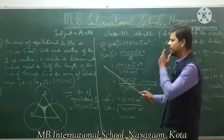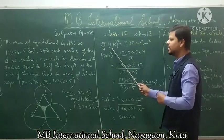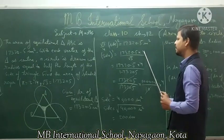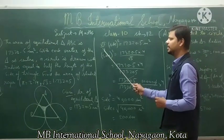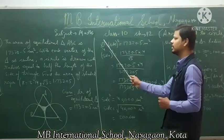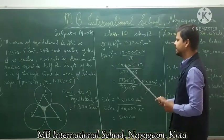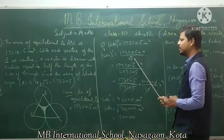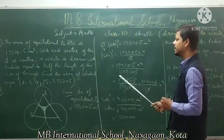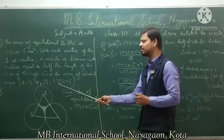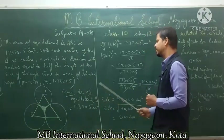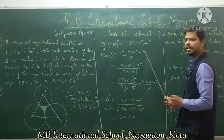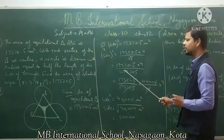So the value of side squared is 17320.5 multiplied by 4 divided by root 3. The value of root 3 given in the question is 1.73205. Remove the decimal from numerator and denominator — same values cancel out.